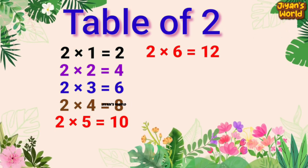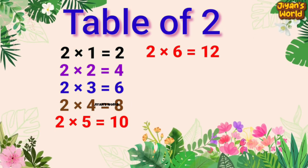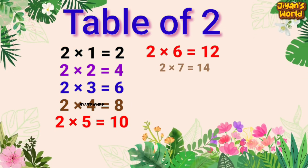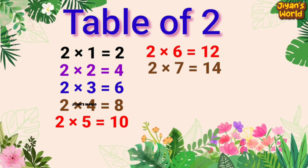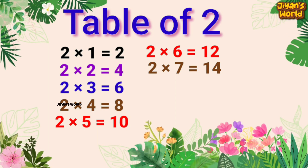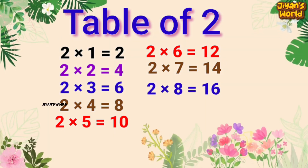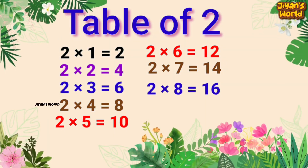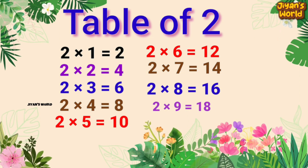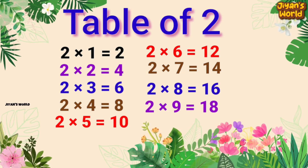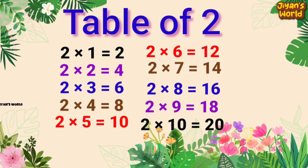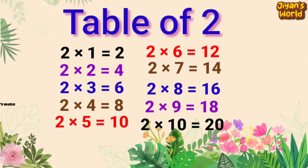2 6s are 12, 2 7s are 14, 2 8s are 16, 2 9s are 18, 2 10s are 20.